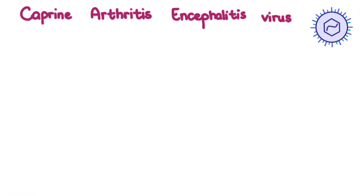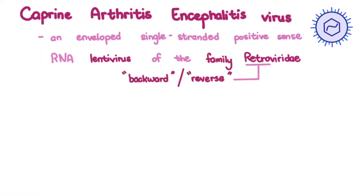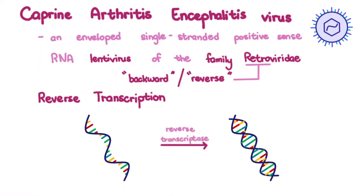The etiologic agent is the caprine arthritis encephalitis virus — a non-enveloped, single-stranded, positive-sense RNA lentivirus of the family Retroviridae. 'Retro' meaning backward or reverse, because all members of this virus family undergo an additional reverse transcription step during viral replication, from RNA to DNA. The DNA here is referred to as the provirus DNA.